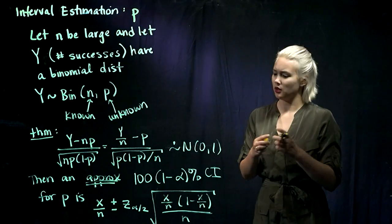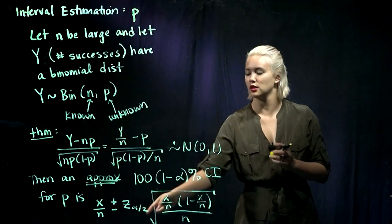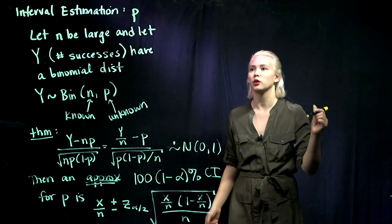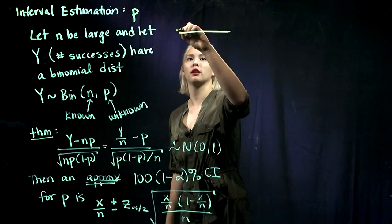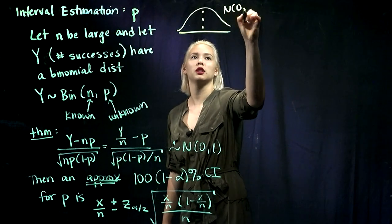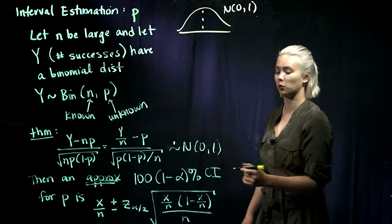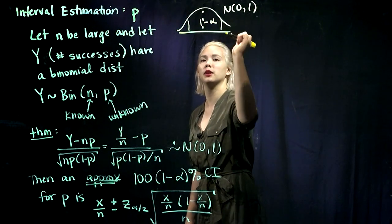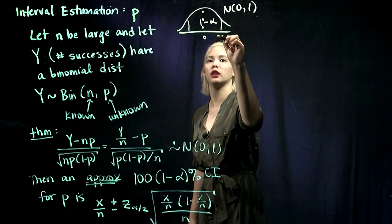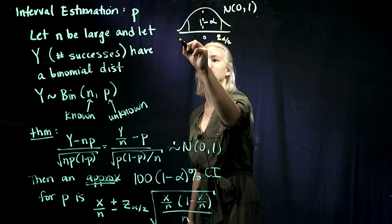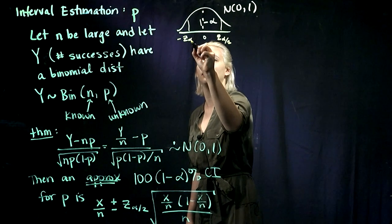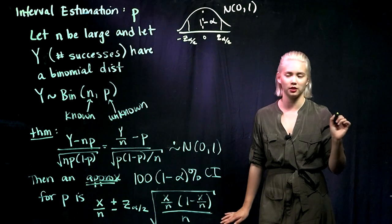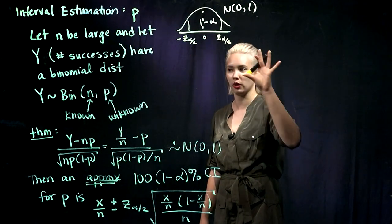So how did we get there? Remember that this z alpha over 2 — we talked about that in the previous video for confidence intervals for a mean. We have that standard normal distribution. If we want to have a 100 times 1 minus alpha percent confidence interval, then we have 1 minus alpha in the middle, and we're looking for z alpha over 2 and negative z alpha over 2. We go to our table, we use q norm, whatever — we just find those two cutoffs and then we can move forward.